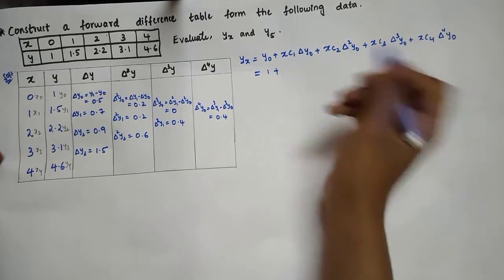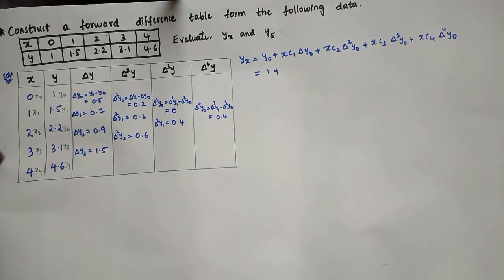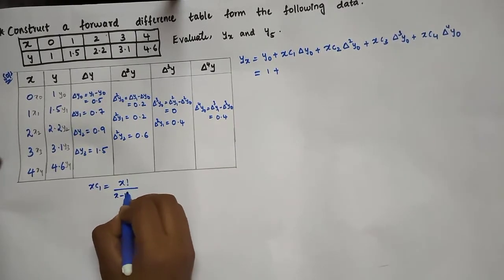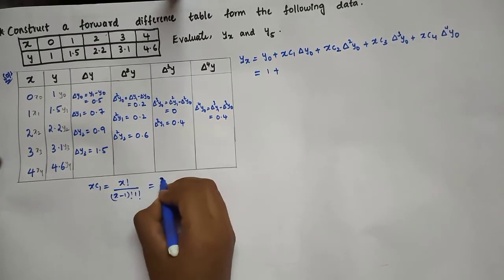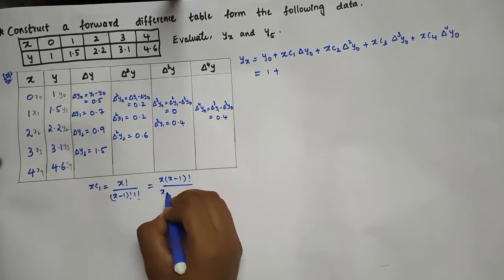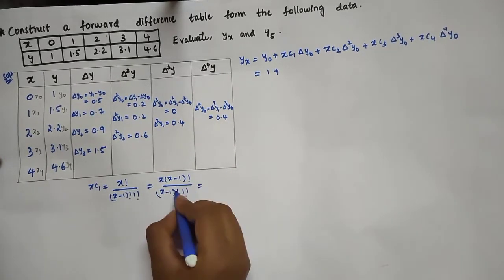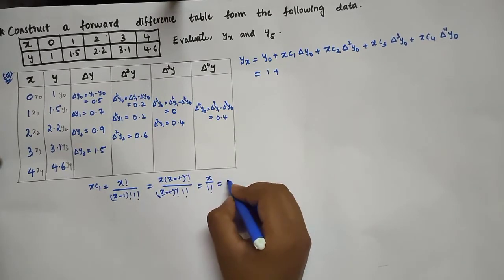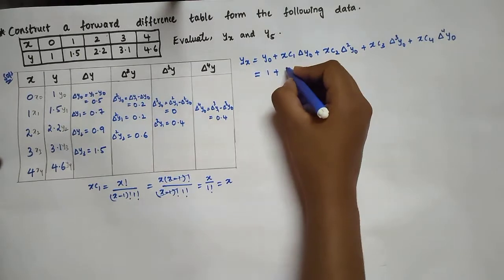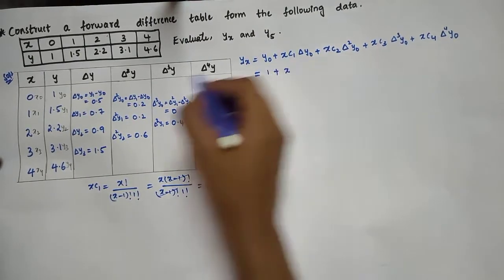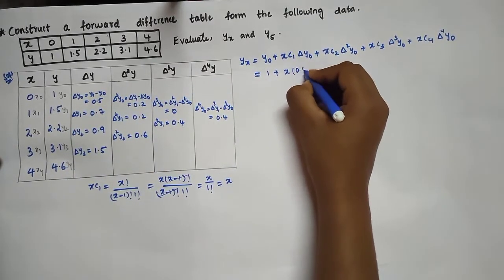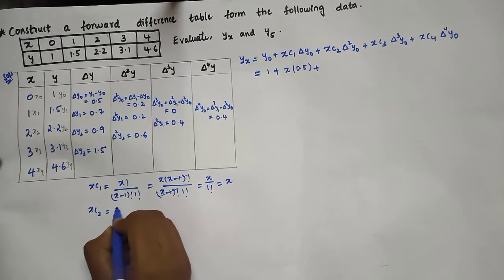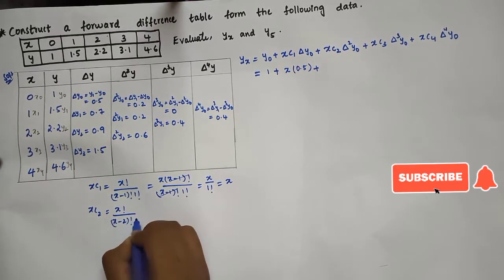The nCr form is n! / [(n−r)! · r!]. So xC1 = x! / [(x−1)! · 1!] = x·(x−1)! / [(x−1)! · 1] = x. Therefore xC1 = x. With Δy₀ = 0.5, the second term becomes x · 0.5.